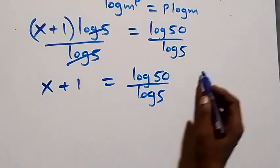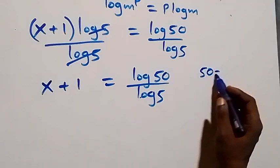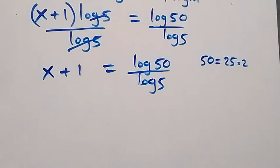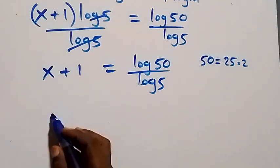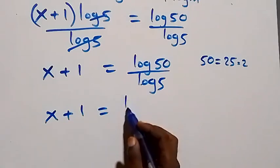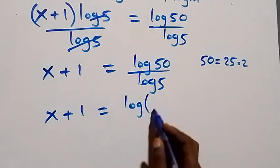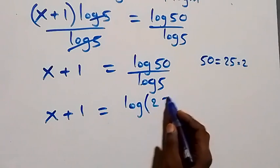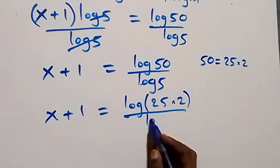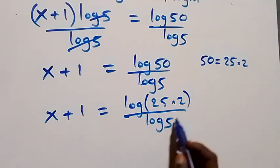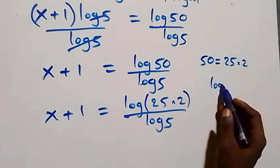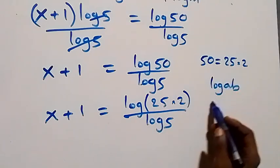Next step, let's rewrite 50 as 25 times 2. So x plus one will now be equal to log of 25 times 2, all over log 5. This follows the law of logarithms: when we have log of a times b, it's the same thing as log a plus log b.